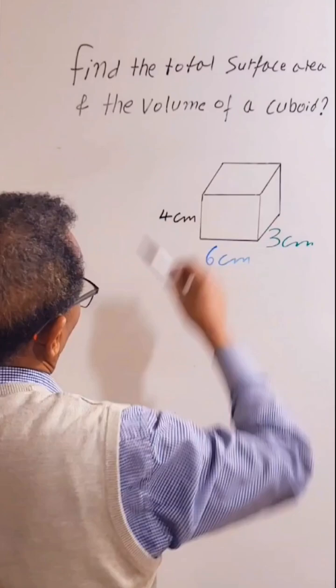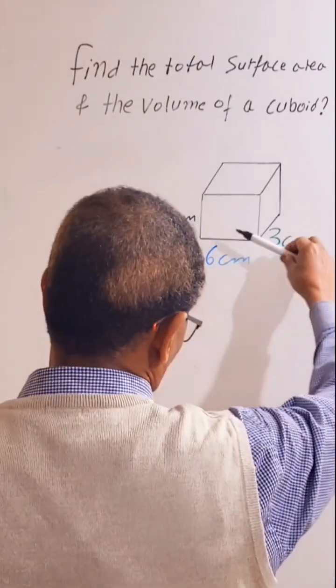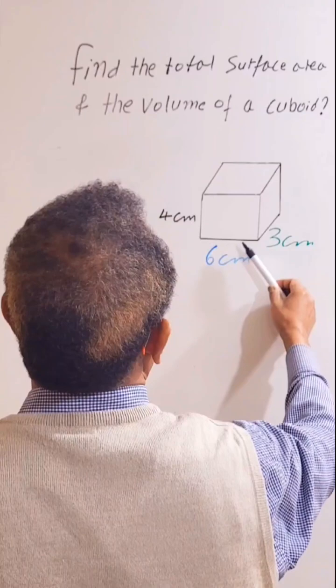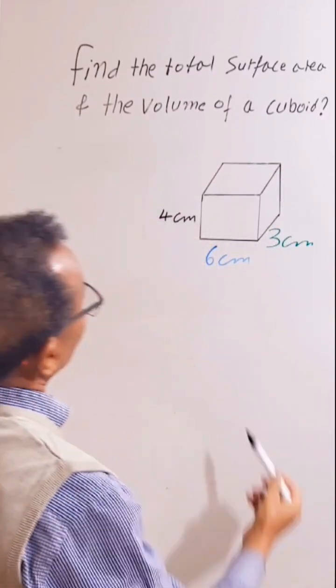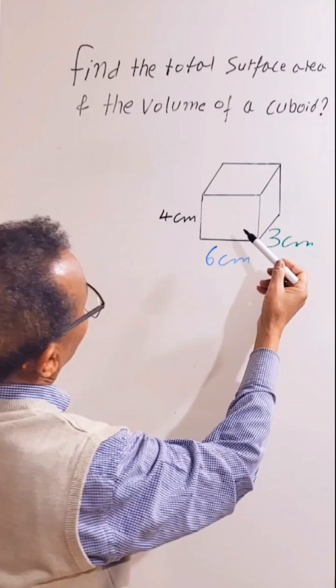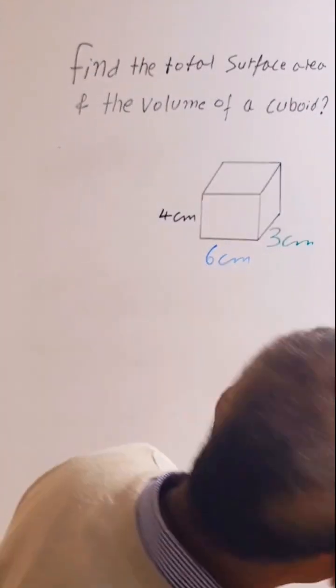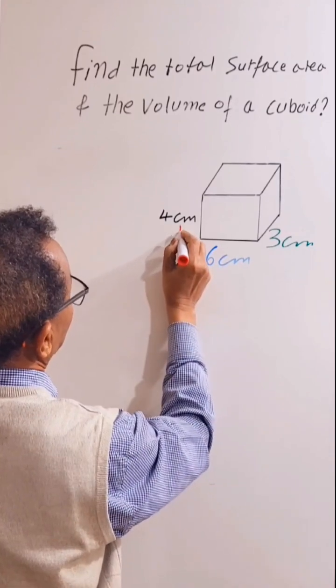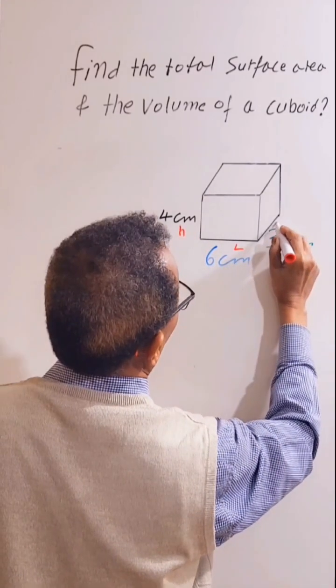So to find the total surface area and volume, let's first find the total surface area. Total surface area is the sum of the area of all six faces. Let's label them: this is the height, this is the length, and this is the width.